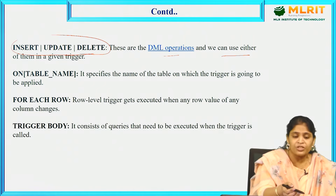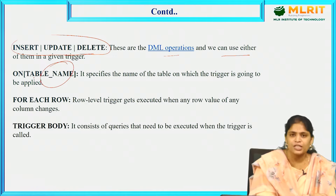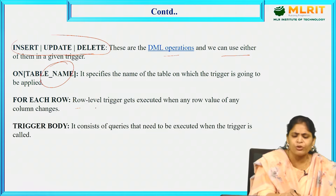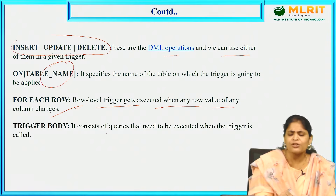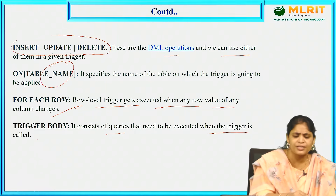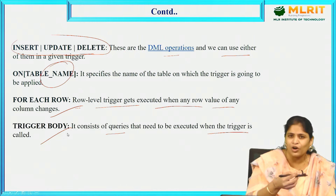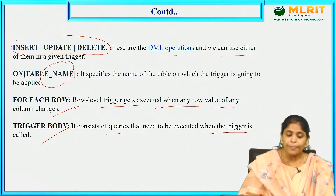On which table are we performing this trigger? The table name must be specified. FOR EACH ROW indicates a row-level trigger, which gets executed when any row value of the column changes. Finally, the trigger body consists of queries that need to be executed when the trigger is called.